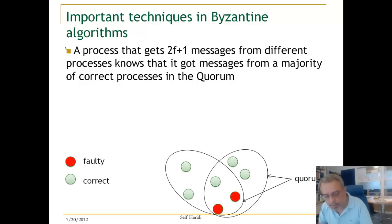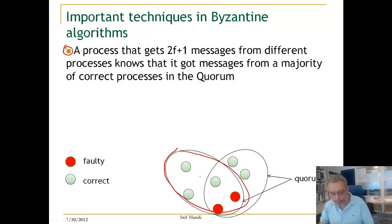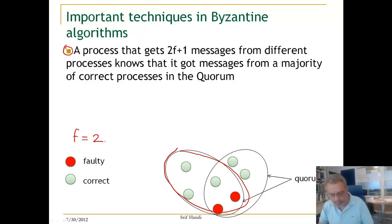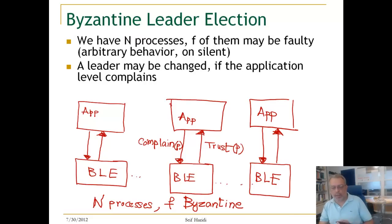A process that gets 2f plus 1 messages from different processes knows that it got messages from a majority of correct processes in this quorum. For example, with f equal to 2, 2f plus 1 is 5, and receiving 5 messages means we got messages from a majority of correct processes in that quorum.